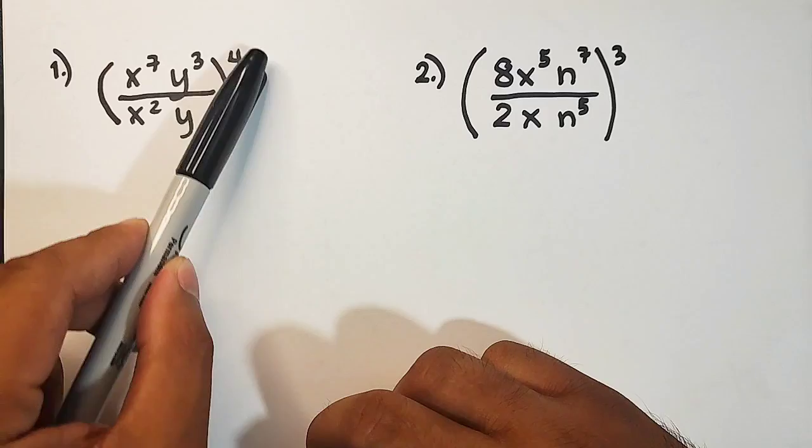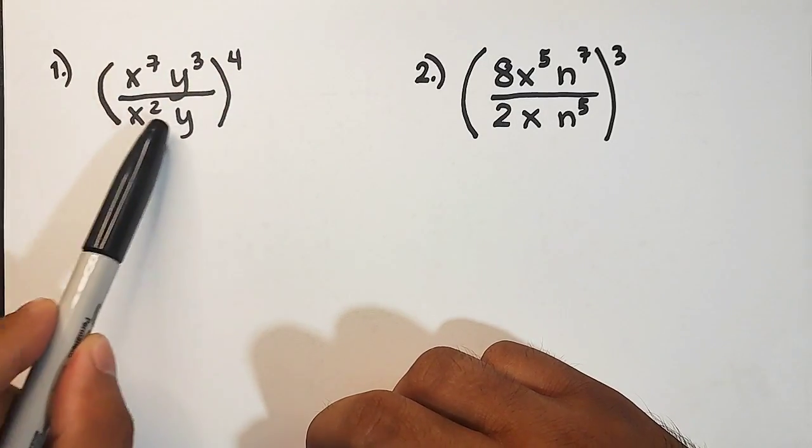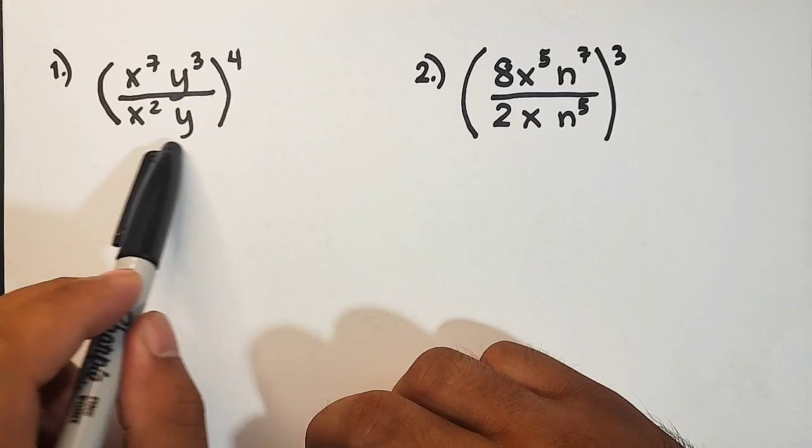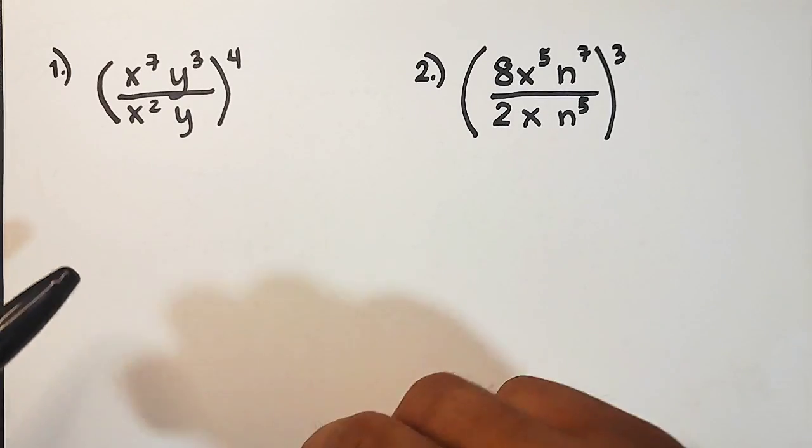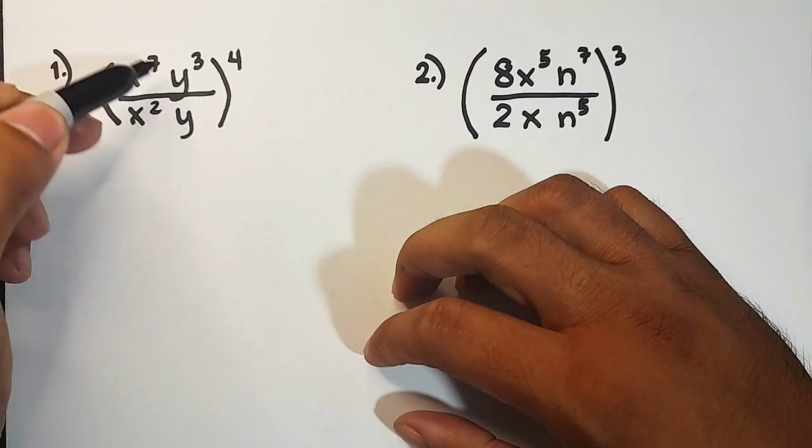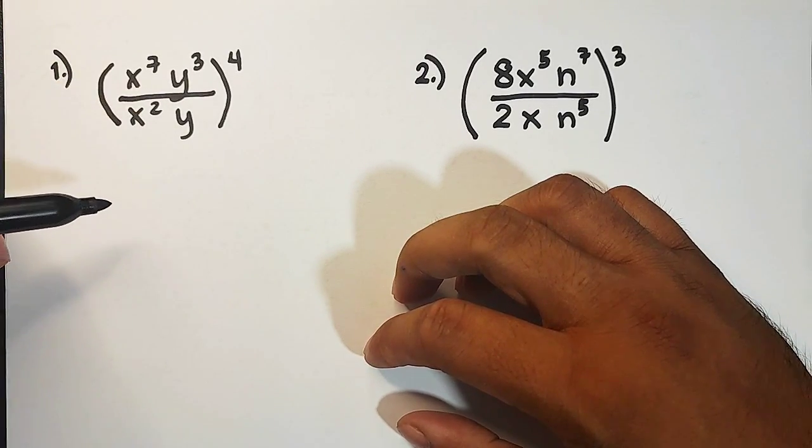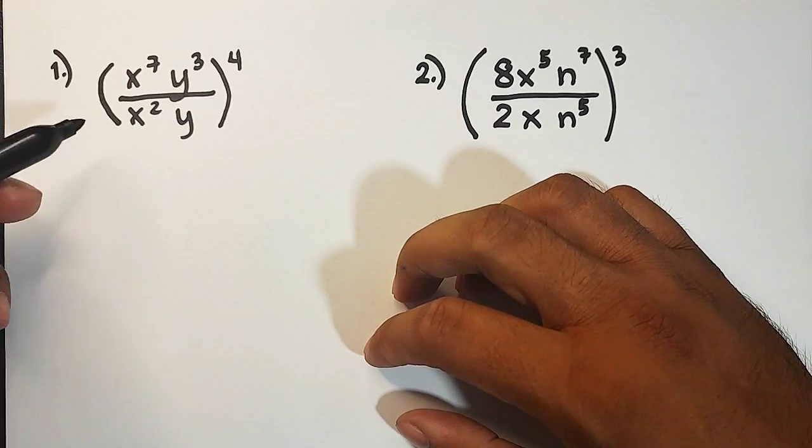First, before applying this exponent, the outside exponent, we need to simplify first the inside part of the parentheses. You will apply the quotient rule for each variable. So for the quotient rule guys, what you need to do is you will subtract the exponents of the variables of the same variables.